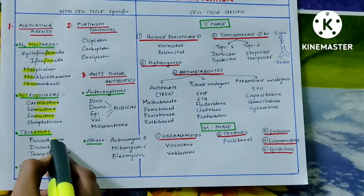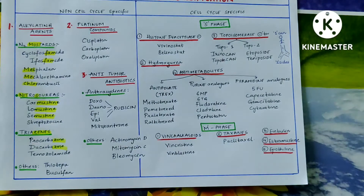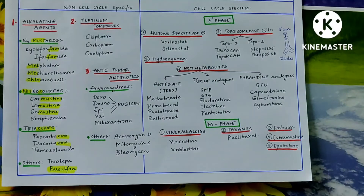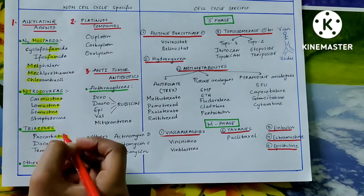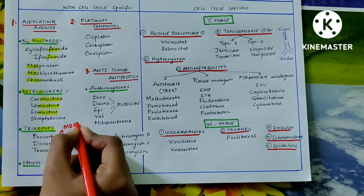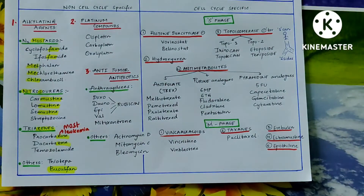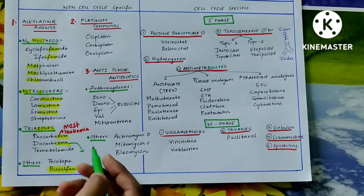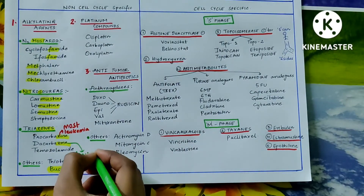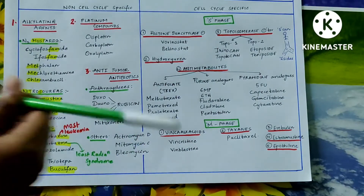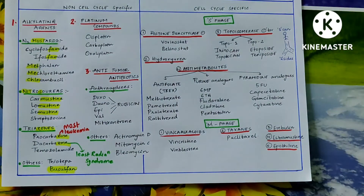Triazines have '-zine' at the end: procarbazine and dacarbazine. Under others, remember thiotopa and busulfan. Key point: busulfan causes pulmonary fibrosis as a side effect. Procarbazine is the most leukemogenic anti-cancer drug among all. Dacarbazine causes the least radiation syndrome among anti-cancer drugs.